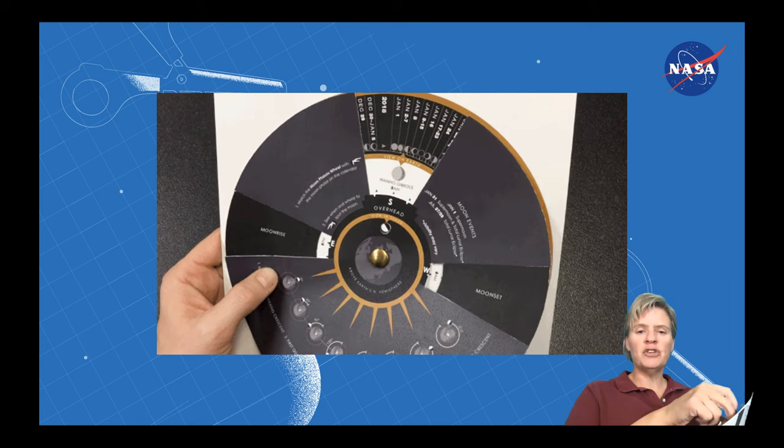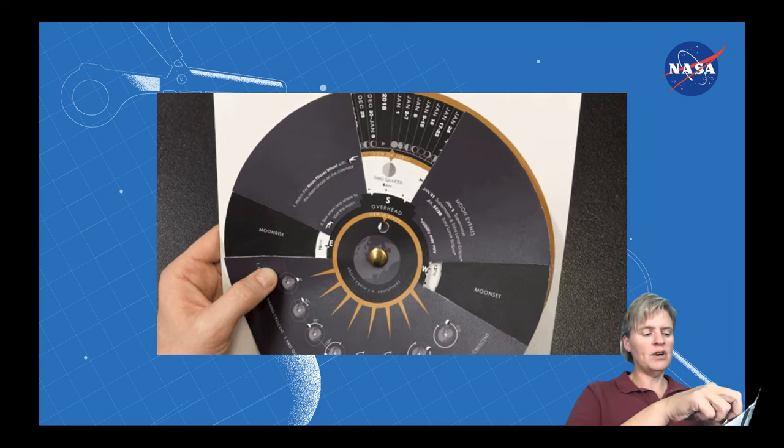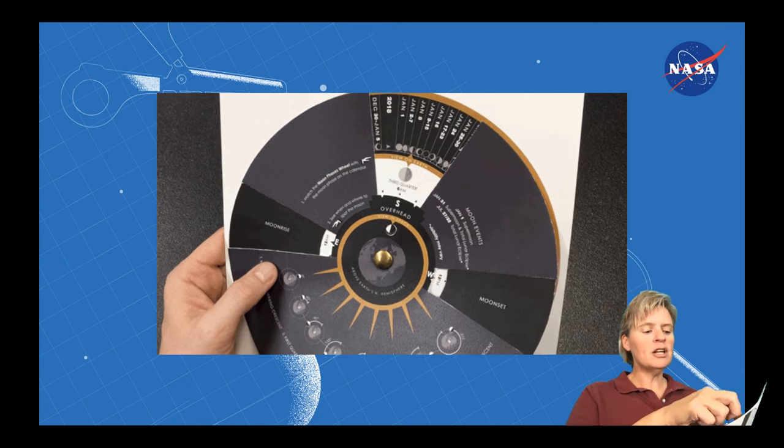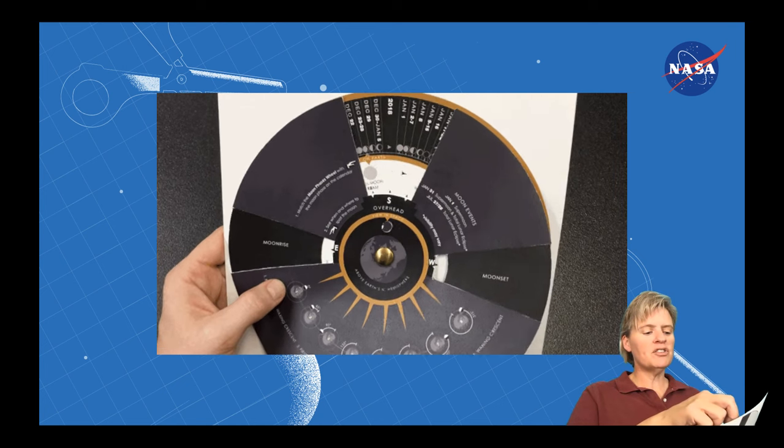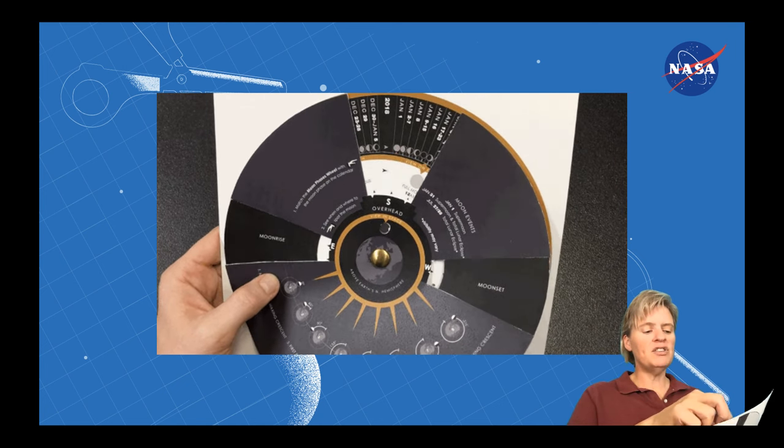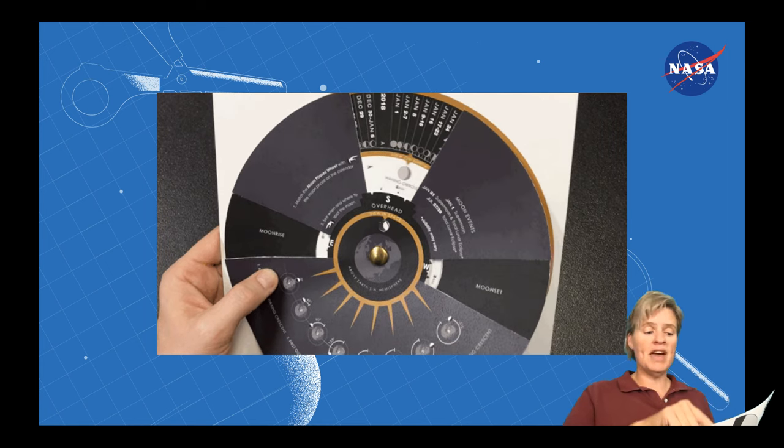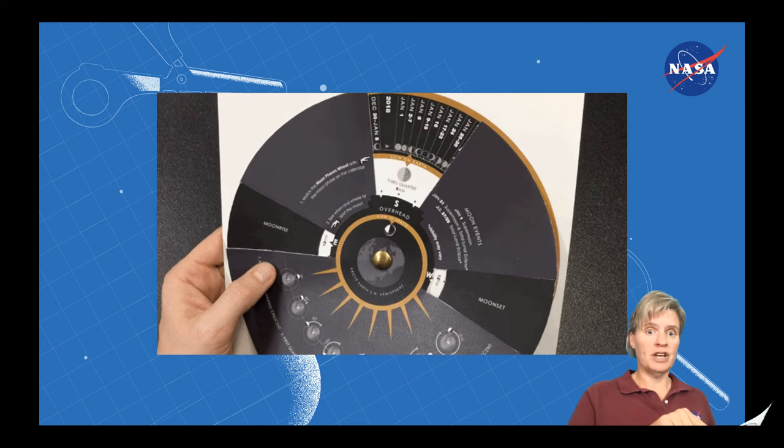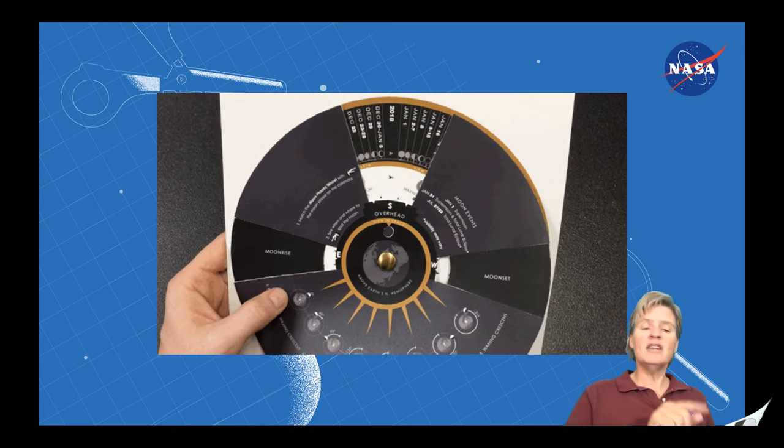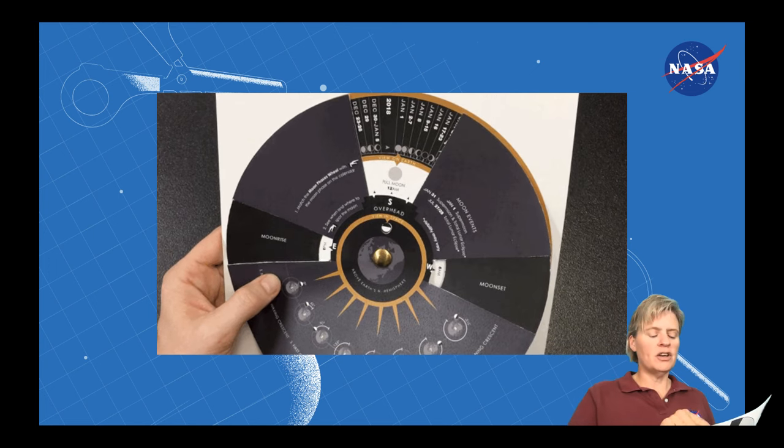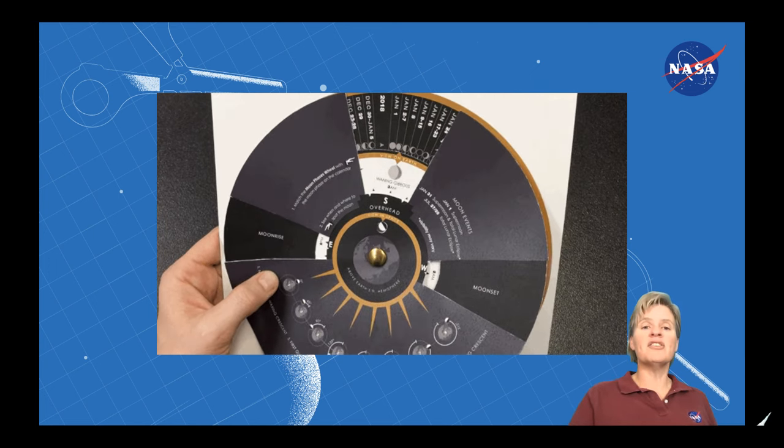I want you to move the center wheel, that wider one. Move it until you see the phases line up. So whatever the phase is on today, find the phase that matches it on the moon phase wheel. And then center those in the wheel and have it centered over the letter S. That's for south.